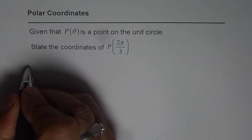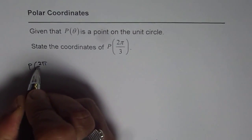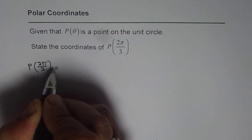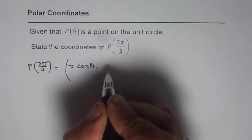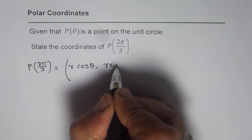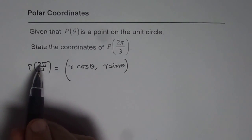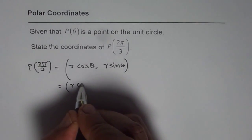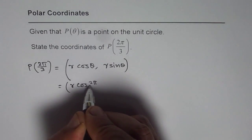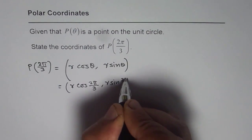When we say the coordinates for the point P of theta, and in this case theta is given to us as 2 pi by 3, the coordinates are r cos theta and r sine theta. R cos theta is the x value, r sine theta is the y value. Since we are given theta as 2 pi by 3, we write this as r cos of 2 pi by 3 and r sine of 2 pi by 3.